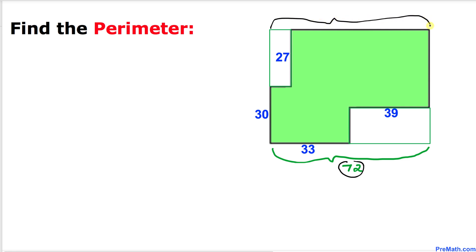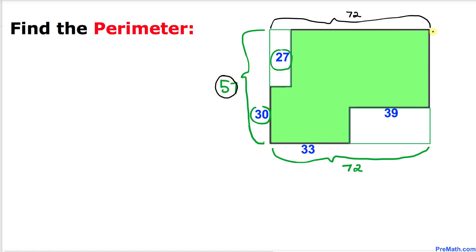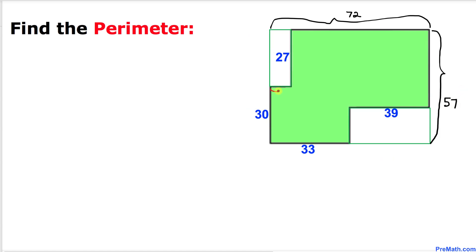Now let's focus on this side length over here. That side length is going to be 27 plus 30, which is 57. If this side is 57, then this side has got to be 57 as well. We can see that this side length is the same as this side length, and likewise this side length is the same as this side length.